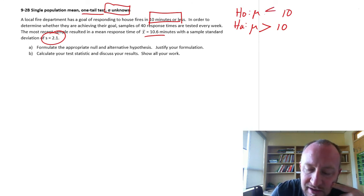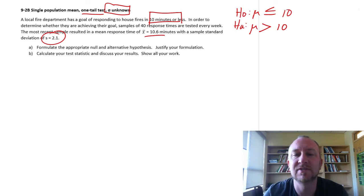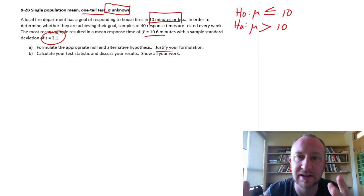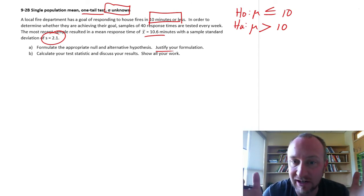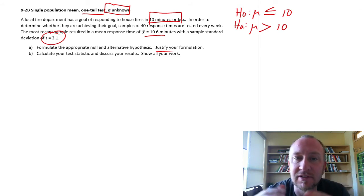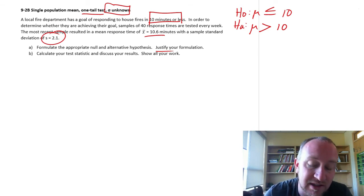So our test in this case is going to be the null is that, yes, we're achieving our goal. And the alternative is that, no, we are not achieving our goal. So if our evidence supports, for my justification here, if the evidence supports the null hypothesis, then I'm comfortable in saying that, yes, we are achieving our goal. We are no more than 10 minutes. It's equal to or it's less than, so we're okay. If the evidence supports the alternative hypothesis, well, then we have a problem that we should probably fix.